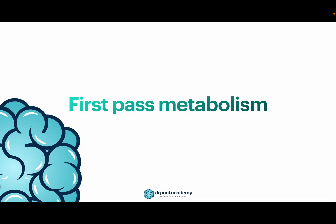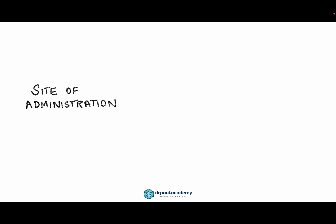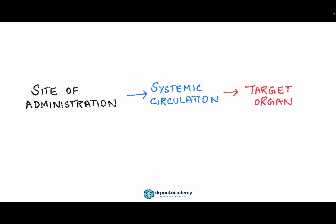Today we'll briefly discuss first pass metabolism. When we discussed bioavailability, we were talking about why we were particularly interested in understanding how much drug reaches the systemic circulation from the site of administration. That's because the amount of drug that reaches the systemic circulation is proportional to the amount of drug that the target organ would experience, which is indirectly proportional to the effect that the drug will produce in the body.